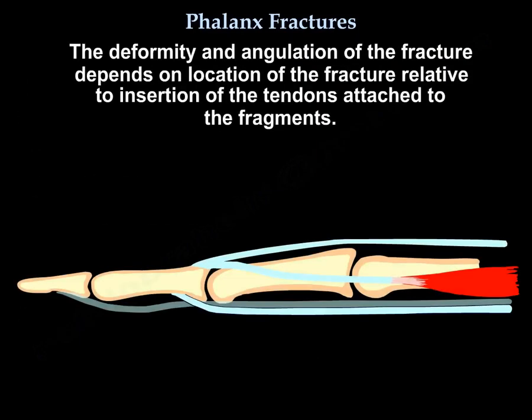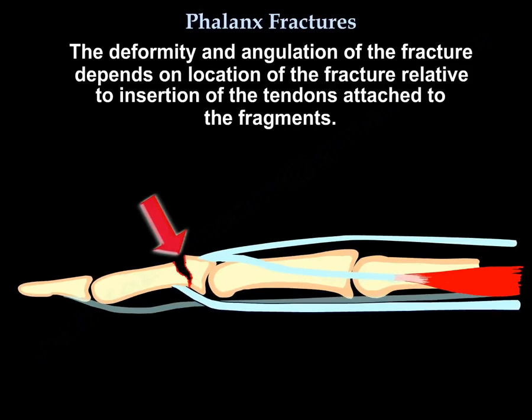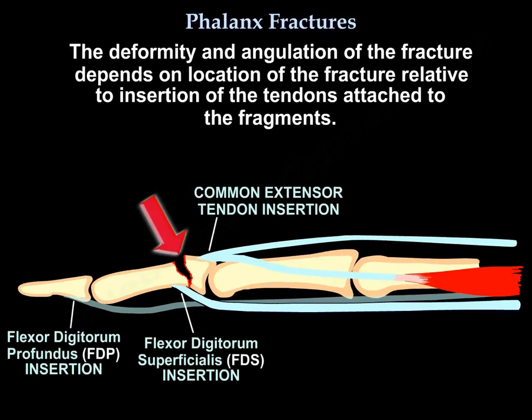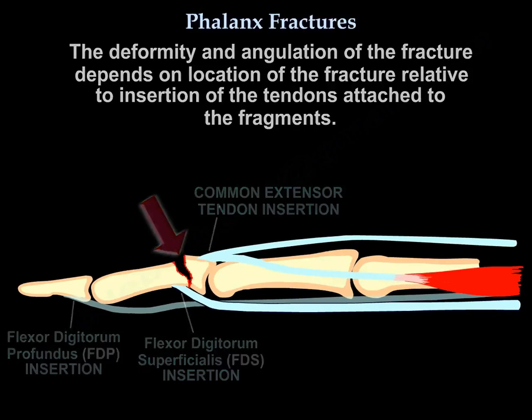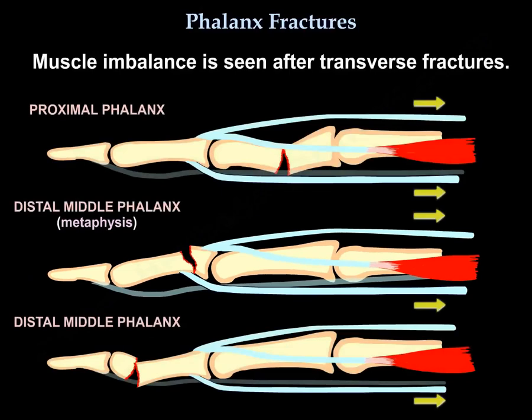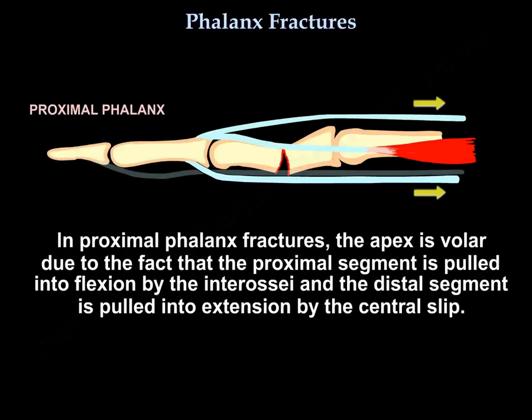The deformity and angulation of the fracture depends on the location of the fracture relative to the insertion of the tendons attached to the fragments. Muscle imbalance is seen after transverse fractures. In proximal phalanx fractures, the apex is volar due to the proximal segment being pulled into flexion by the interossei, and the distal segment being pulled into extension by the central slip.